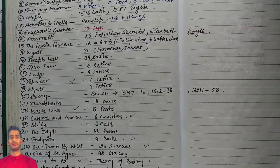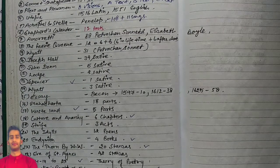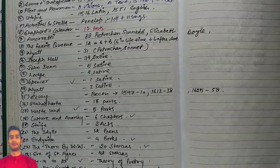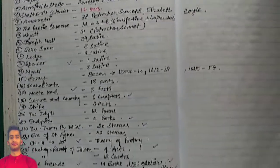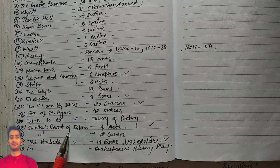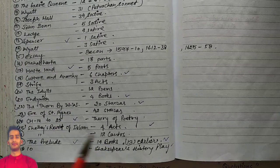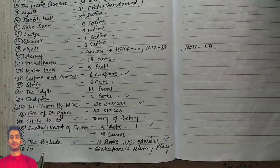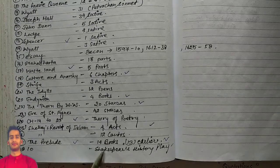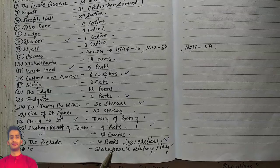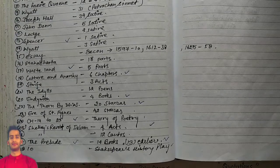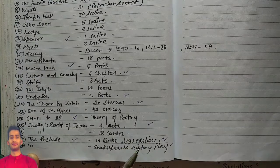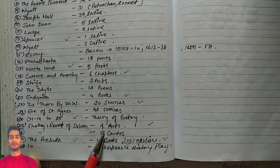Shelley's Revolt of Islam has four acts and it has 12 cantos. The Prelude has 14 books, and it was planned to write down only 13 but it has 14 now.